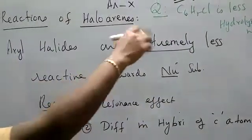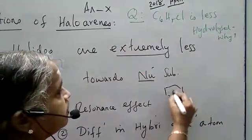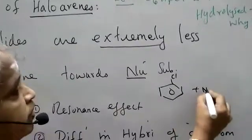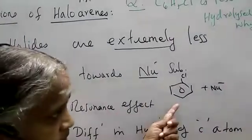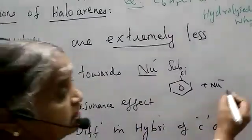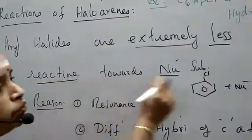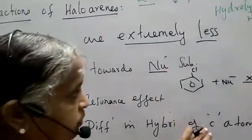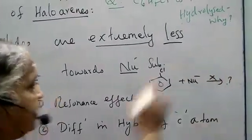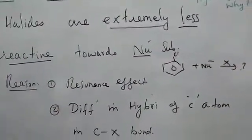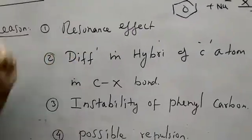Chlorobenzene is not ready for nucleophilic substitution. A nucleophile is a species with a negative charge. The haloarene is extremely less reactive towards the nucleophile — it will react, but it will take a lot of conditions. The reason they are asking is why it is that less reactive. You are having four key points. The first point is due to the resonance effect.